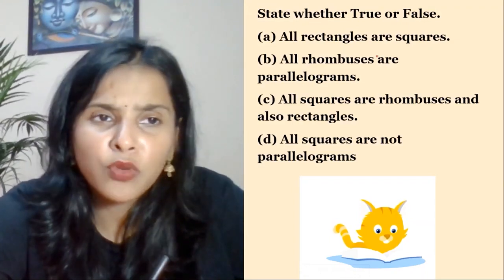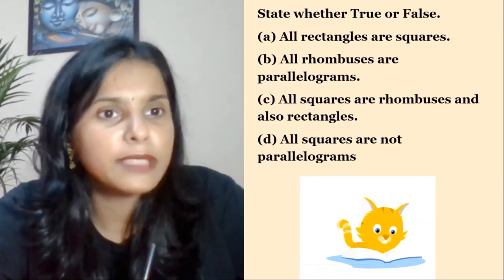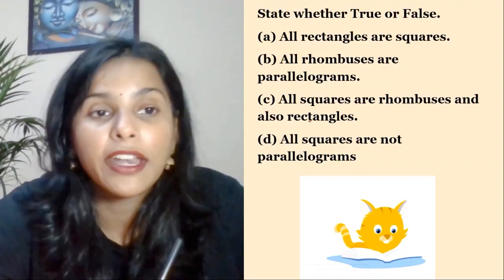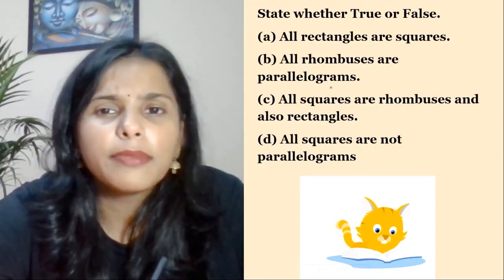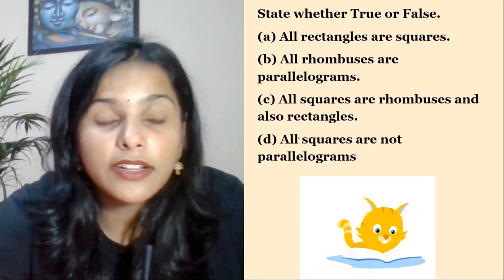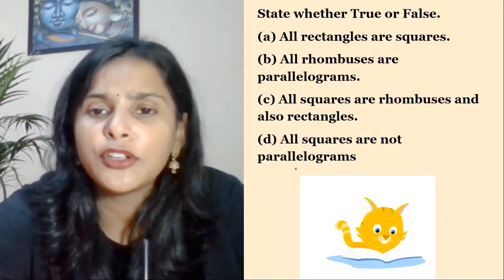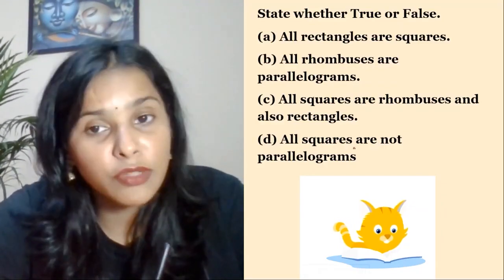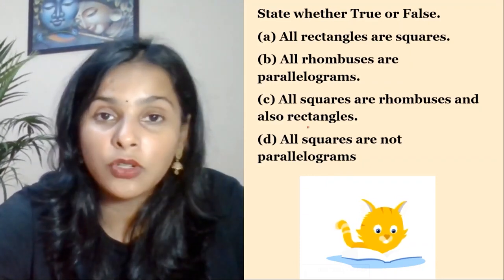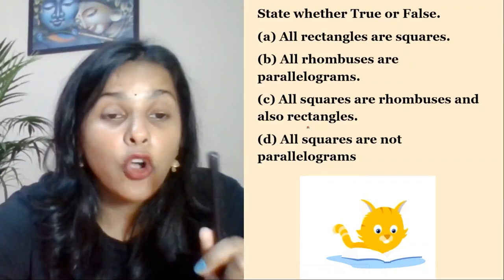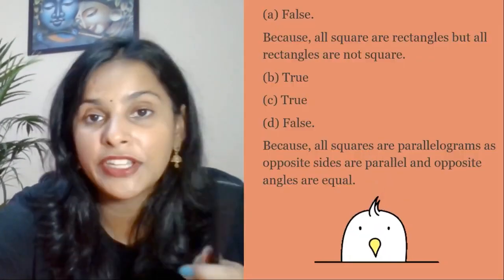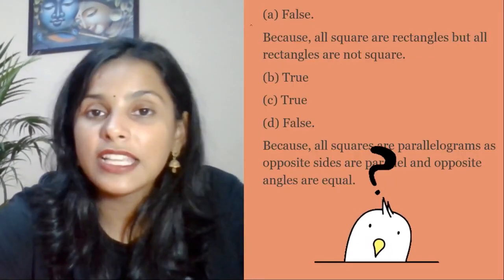Now true or false — last question. All rectangles are squares: False. All squares are rectangles, but all rectangles are not squares. All rhombuses are parallelograms: Definitely true. All squares are rhombuses and rectangles also: Very very true. All squares are not parallelograms: False, because all squares are parallelograms as opposite sides are parallel and opposite angles are equal.